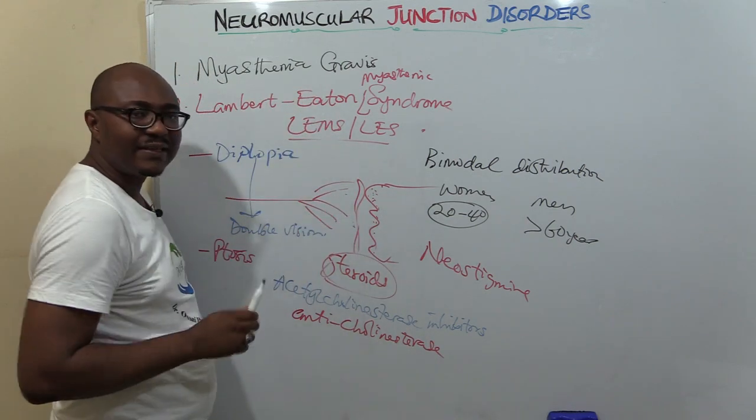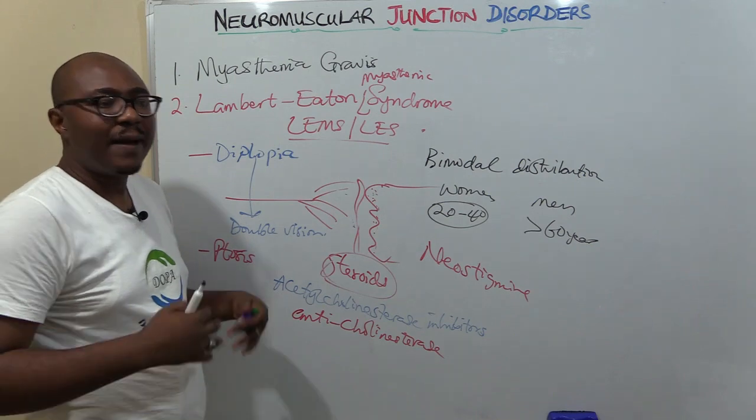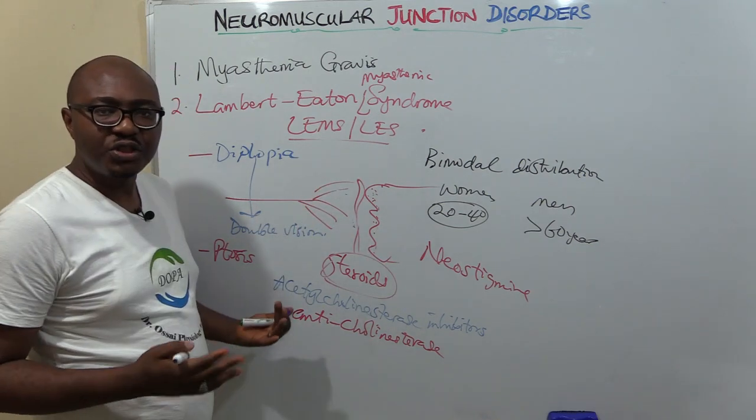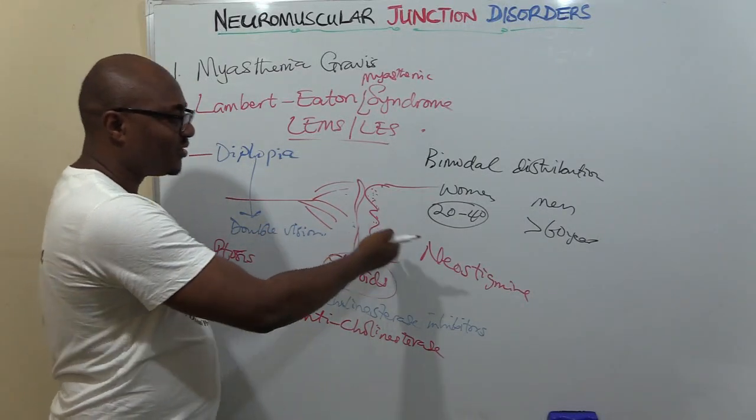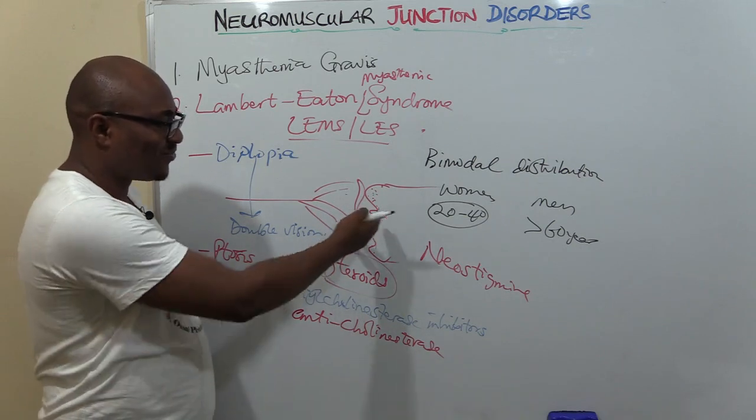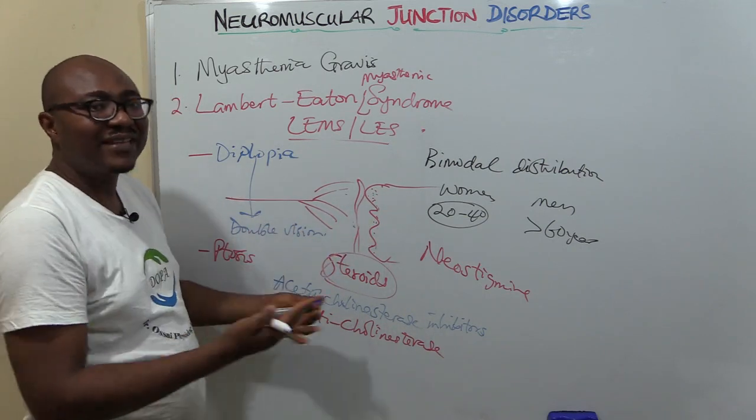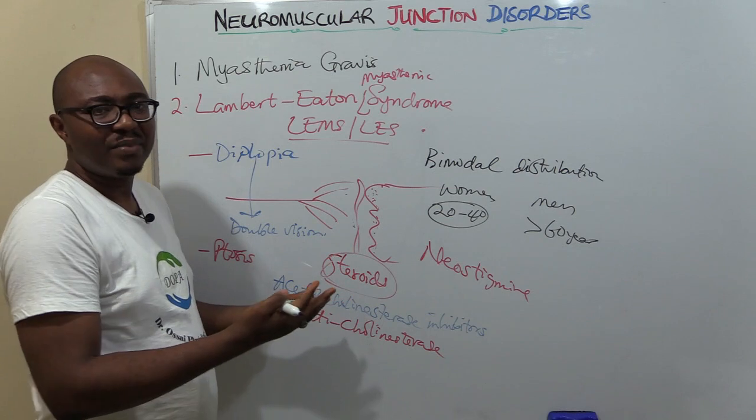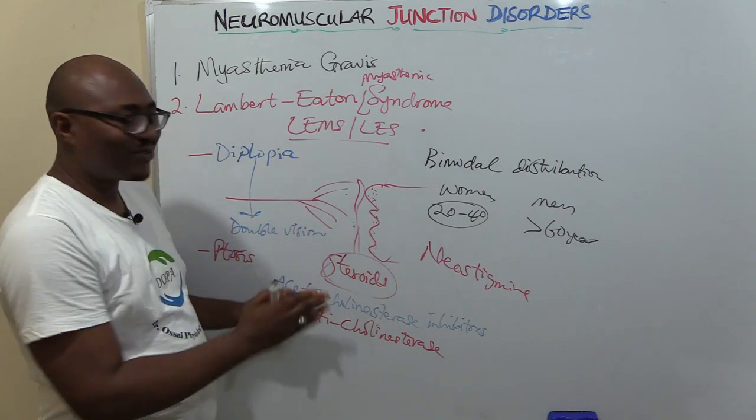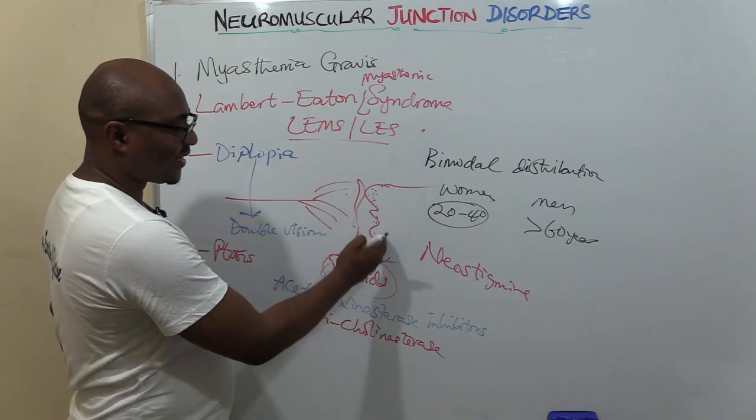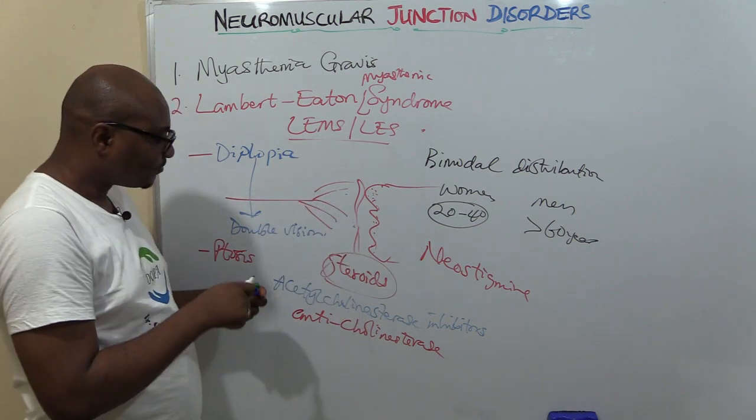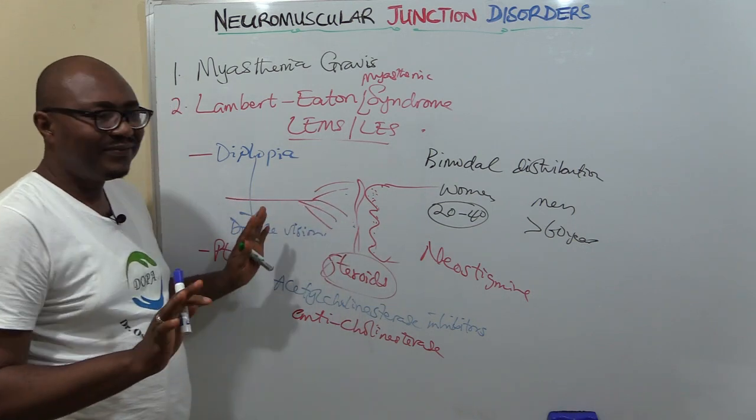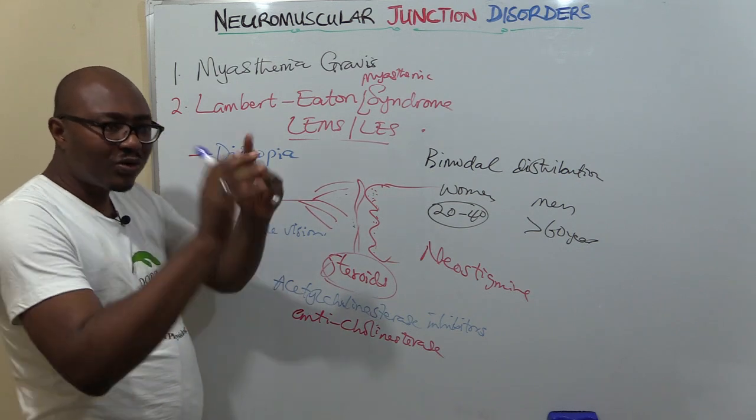While Myasthenia Gravis is attacking nicotinic receptors, this one is attacking the voltage-gated calcium channels on the presynaptic side. That means they won't function, calcium cannot enter, neurotransmitter cannot be released. You see the final effect is the same, but the mechanism is different—this one attacks what's on the presynaptic side, that one attacks what's on the postsynaptic side.